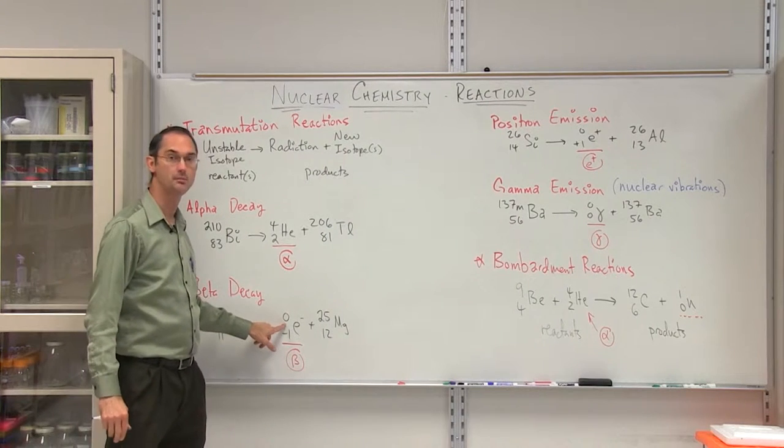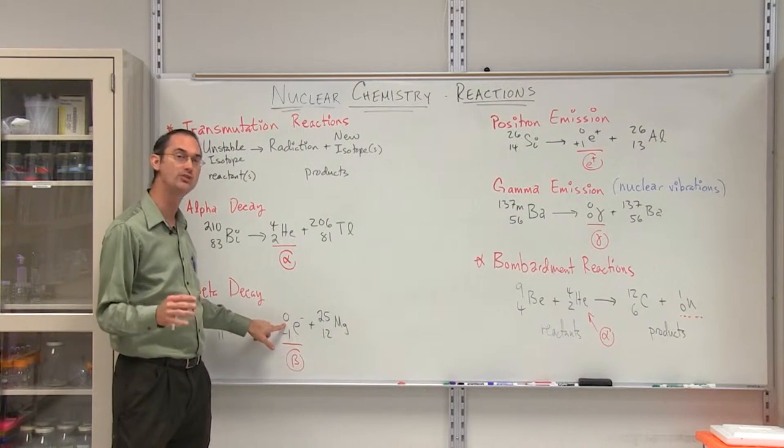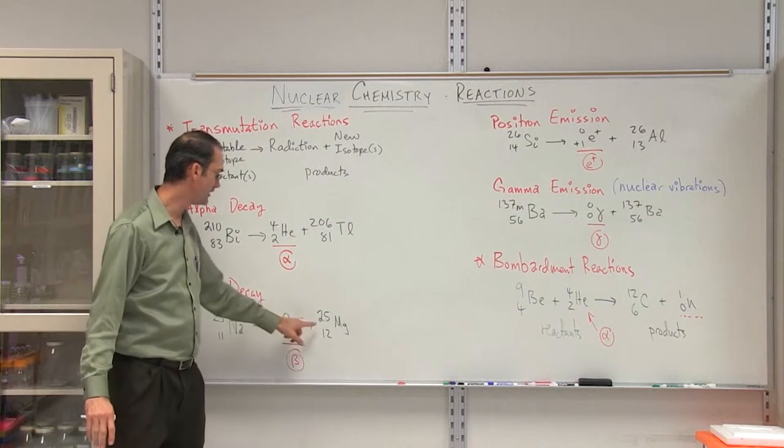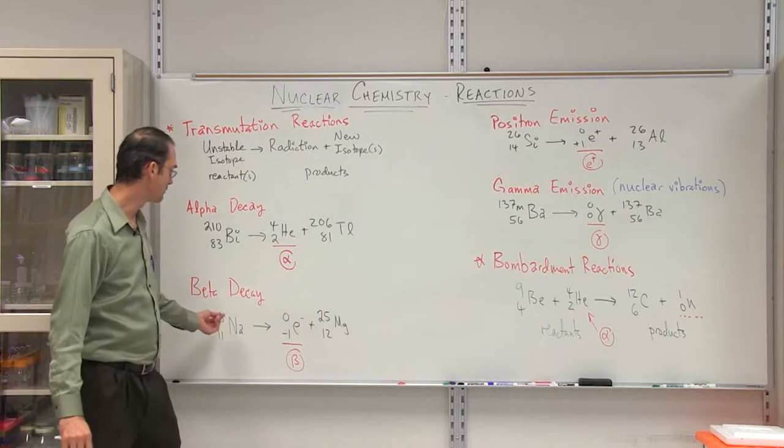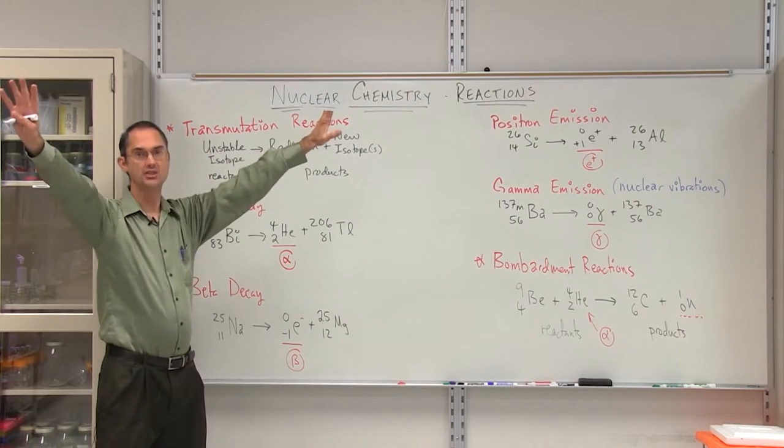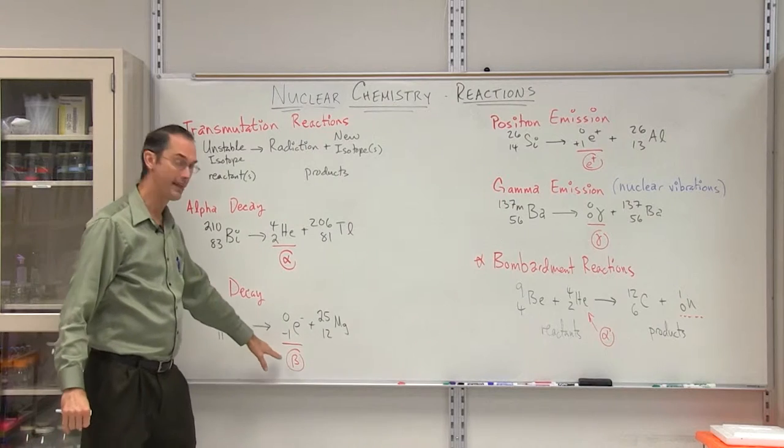25, we're not taking any mass away because the electron's mass is about 1/1000 of the neutron or the proton. So 25 minus 0 is going to give us a 25. So we begin with sodium and we end up with magnesium and out there someplace goes the electron or the beta particle.